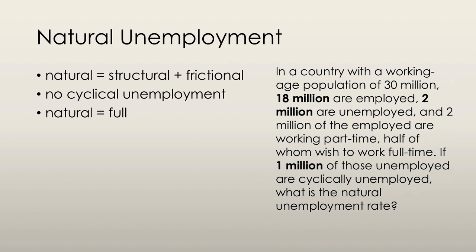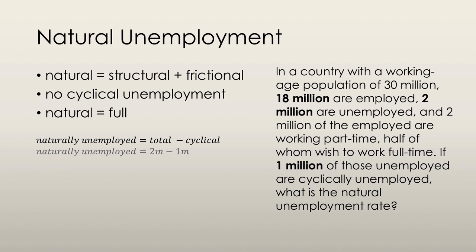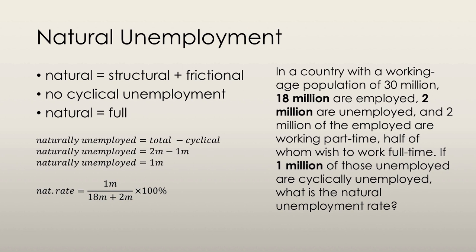To find the number of naturally unemployed people, we take the total unemployed and subtract those who are cyclically unemployed, because cyclical unemployment doesn't count as part of the natural unemployment rate. So we take 2 million total unemployed minus 1 million cyclically unemployed, giving us 1 million naturally unemployed. Then we use the same formula as the unemployment rate: we divide the naturally unemployed (1 million) by the total labor force (18 million employed plus 2 million unemployed = 20 million), multiply by 100, and get a natural unemployment rate of 5%.